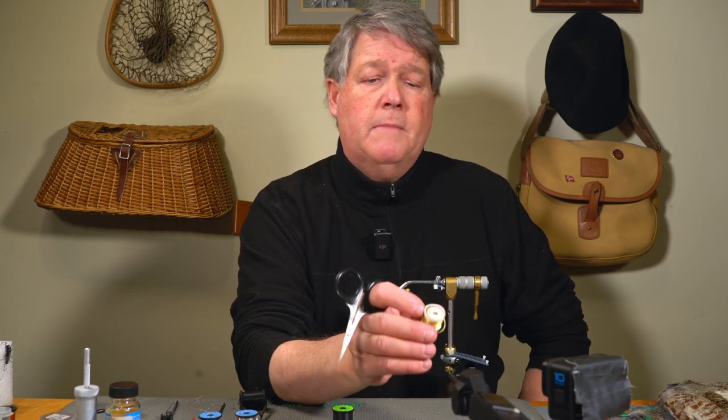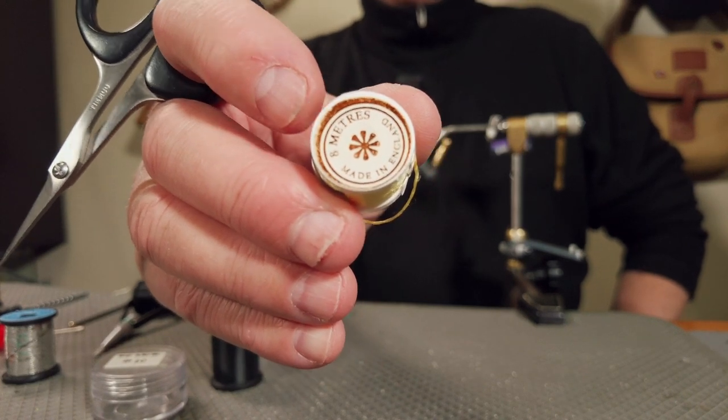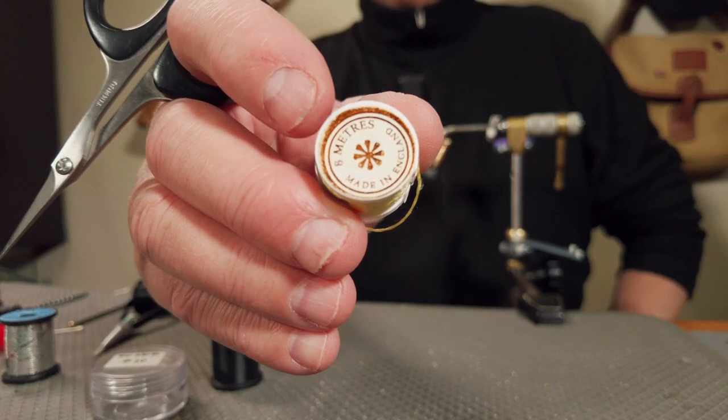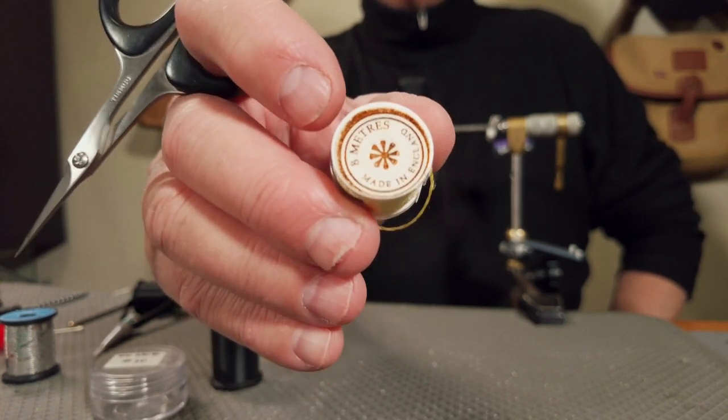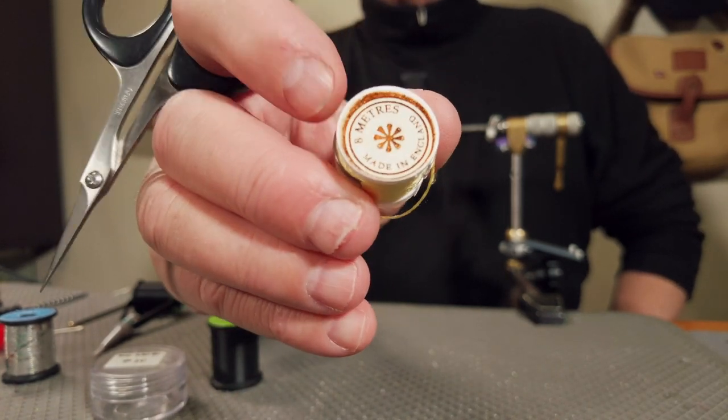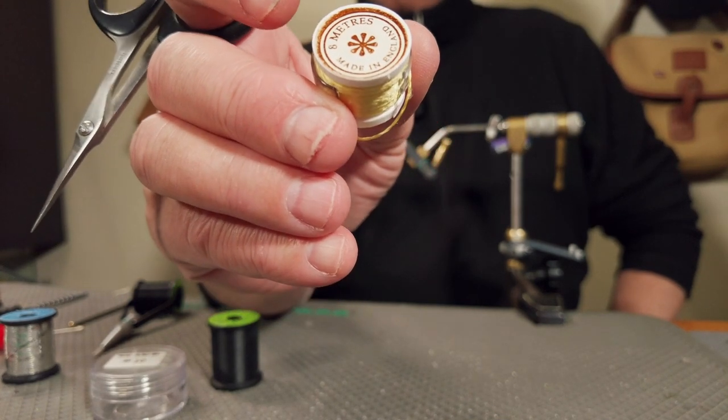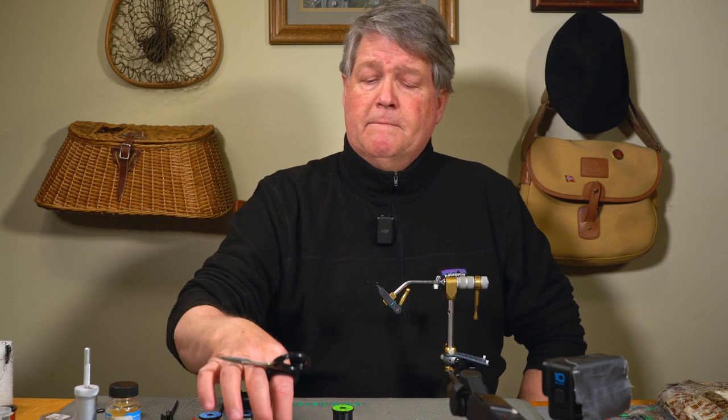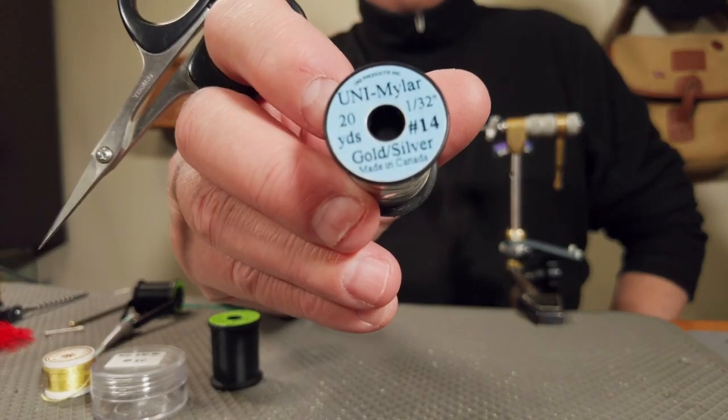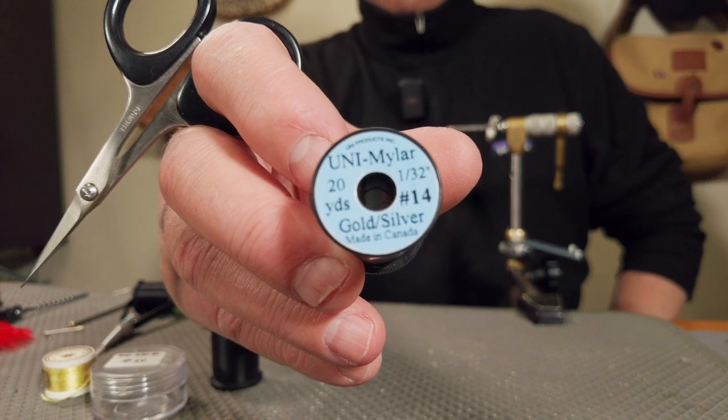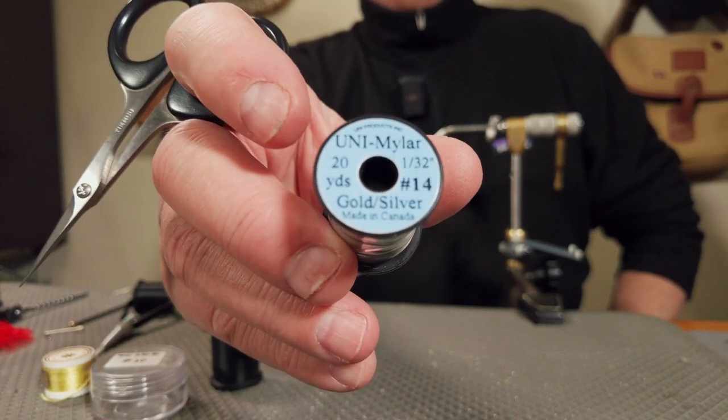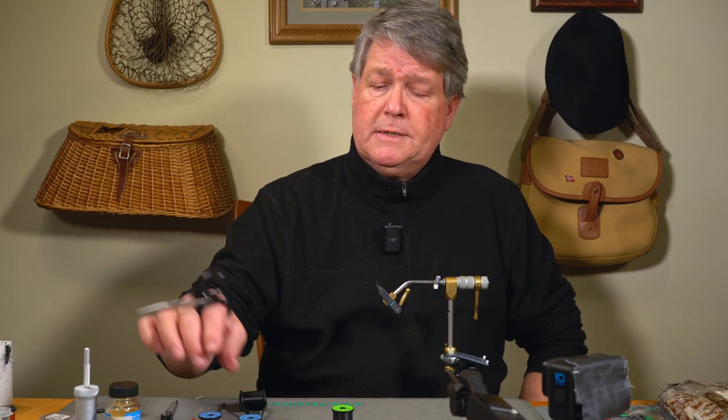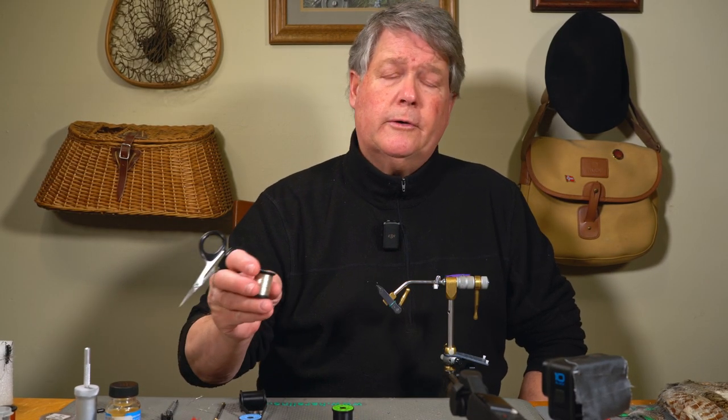The main body of the fly, I'm using a Pearsell silk which is no longer available on the market, but there are several manufacturers that have a silk floss and that's what I'm using for the body. The underbody is going to be a Mylar silver tinsel and that just gives brightness to the fly and makes it glow in the water a little better.